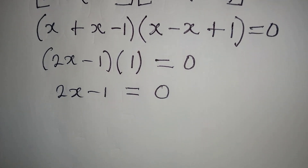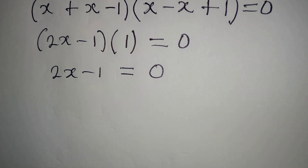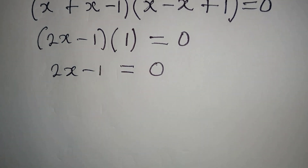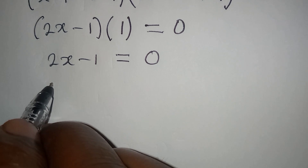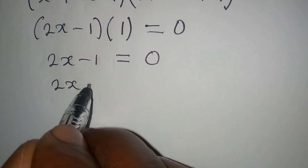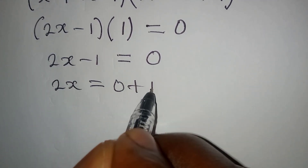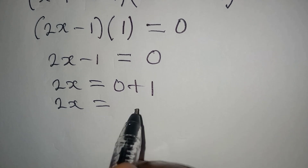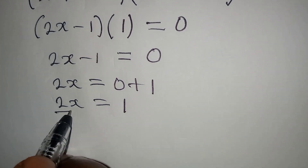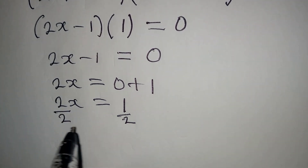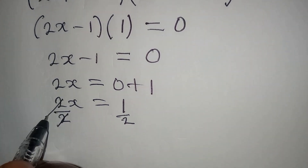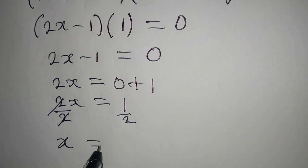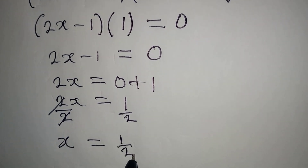Since 1 times (2x minus 1) still gives 2x minus 1, we have 2x minus 1 equal to 0. This means there is only one solution. From here, 2x equals 1, and dividing both sides by 2, x equals 1 over 2.